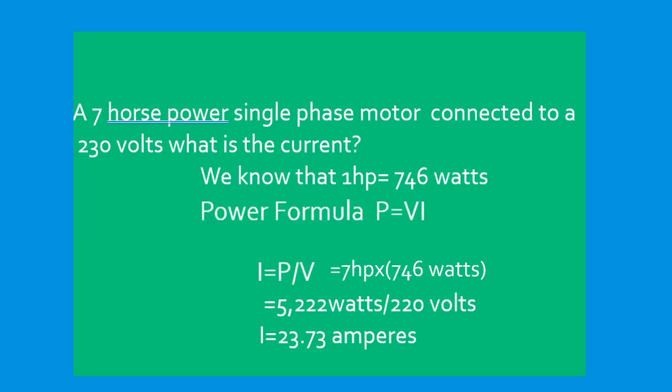Next, a 7 horsepower single phase motor connected to 230 volts. What is the current? We know that one horsepower equals 746 watts.